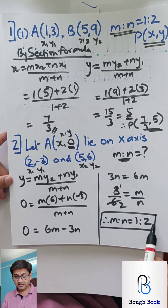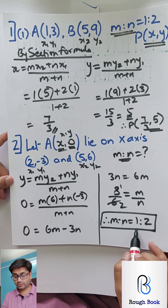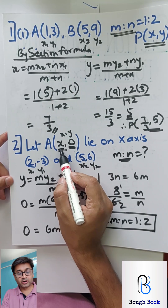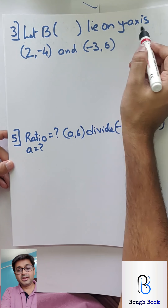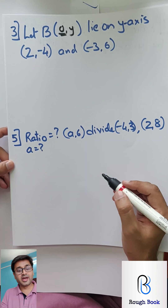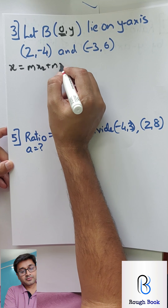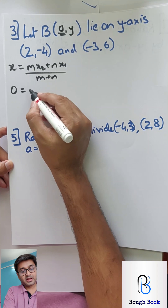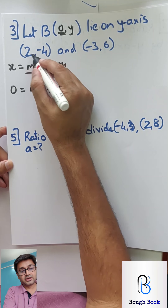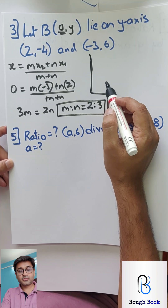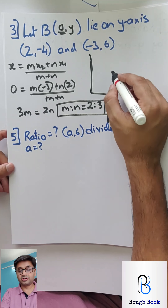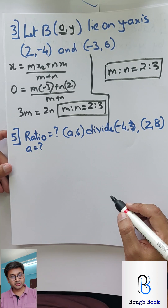Once you got the ratio, you can substitute back into the X formula to get the X coordinate as well. Sum number 3: B lies on the Y-axis, so it is (0, Y). Since X is known as 0, apply the X formula. X = (M·X2 + N·X1) / (M+N). X is 0, X2 is −3, X1 is 2. Cross multiplying: 0 = −3M + 2N, so M:N = 2:3. The answer for sum 3 is ratio 2 is to 3.